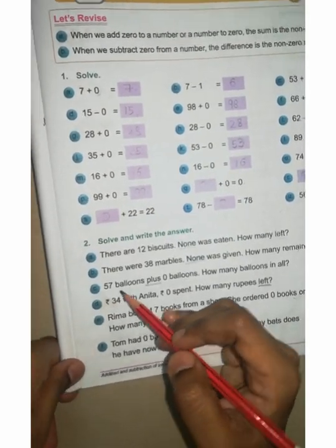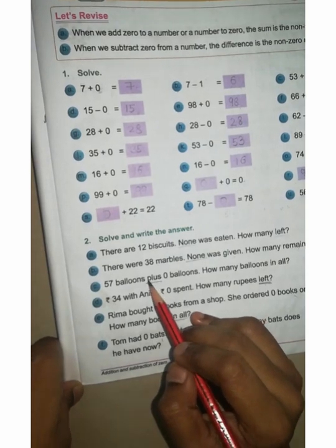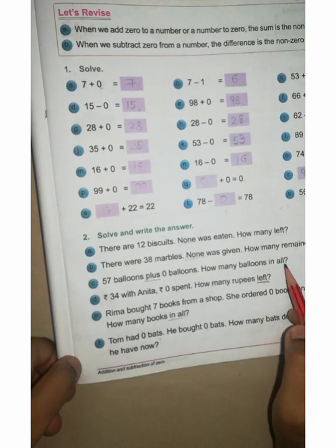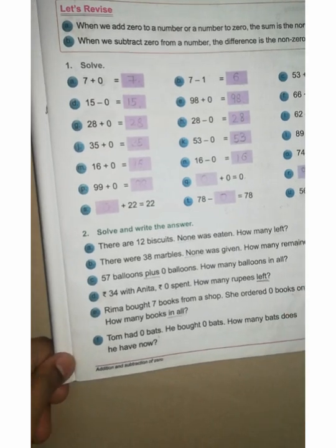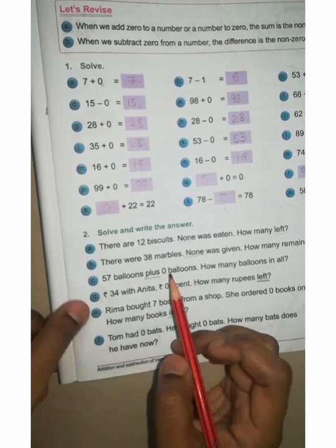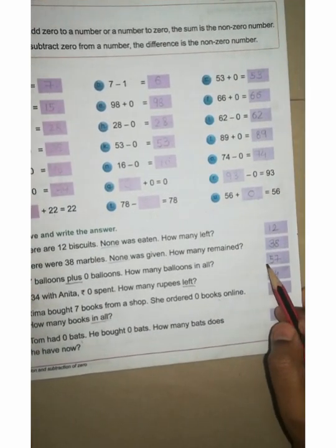Now C: 57 balloons plus 0 balloons. Here you can see clearly given plus. How many balloons in all? It means total they are asking, how many balloons? 57 plus 0, so you got 57 right here. As it is 57.